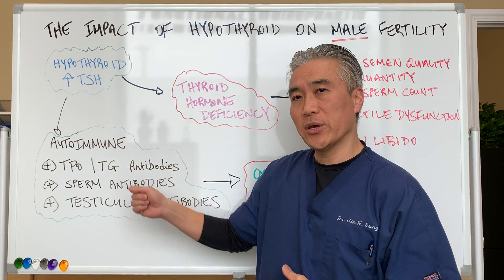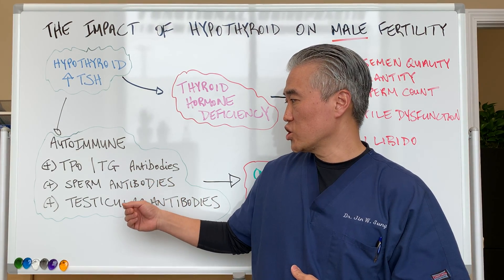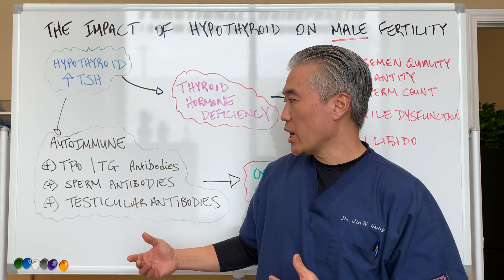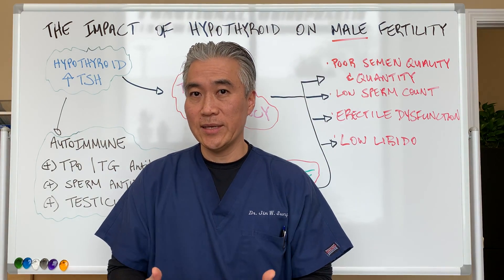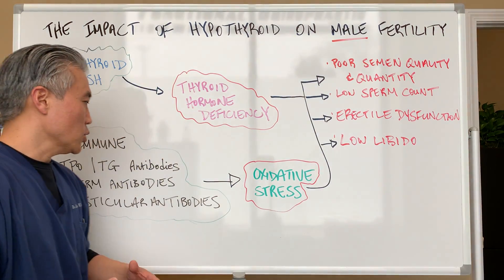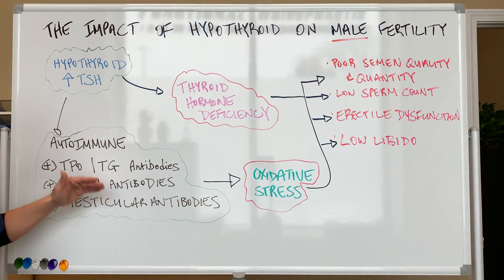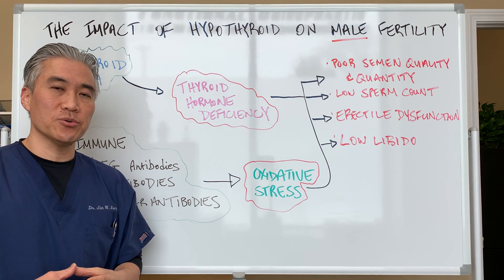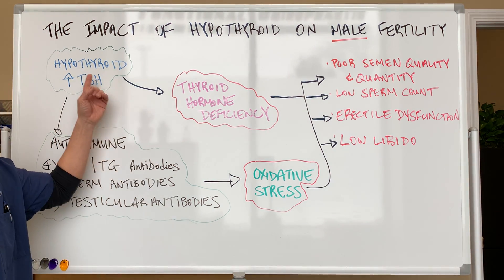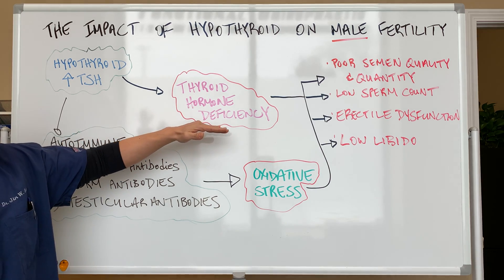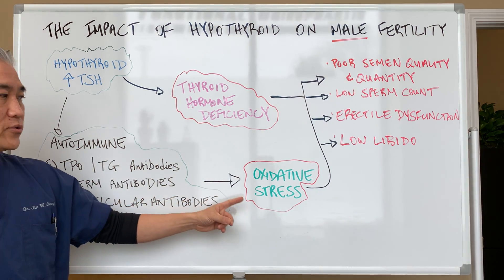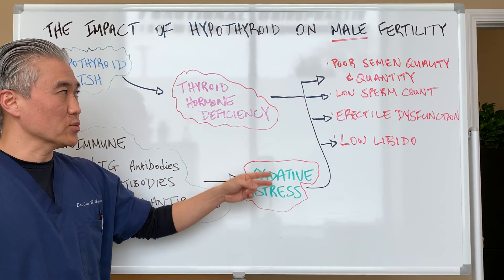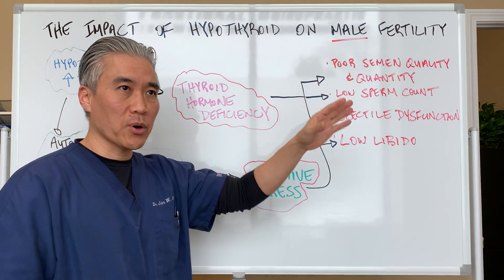When we have positive TPO and TG antibodies for men, the chances or probability goes up for sperm antibodies and testicular antibodies, which can lead to infertility in men. The autoimmune version of thyroid can also impact other tissues, and the chances of autoimmunity developing in other tissues goes up by more than 50%. Hypothyroid with an increase in TSH will also create a deficiency in thyroid hormones, and the autoimmune version will create oxidative stress. These two things will start to impact sperm quality.